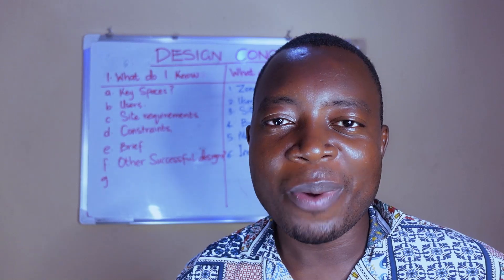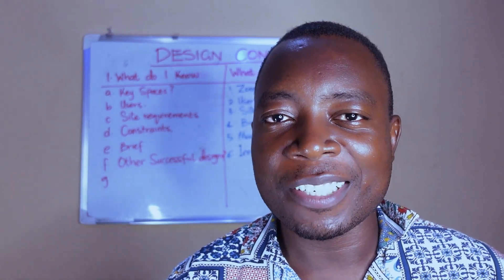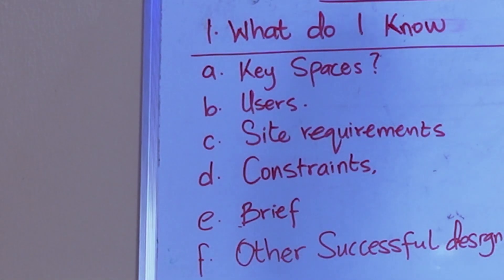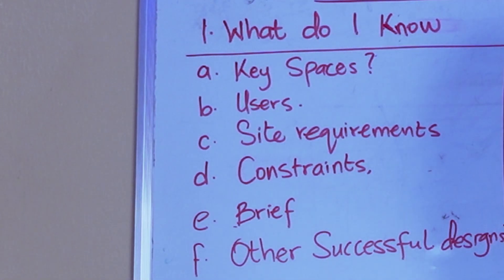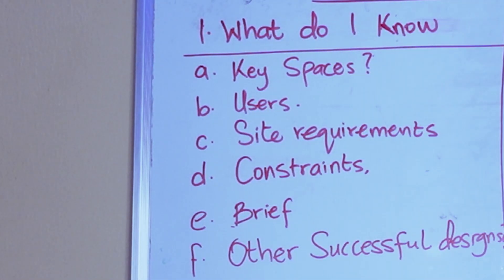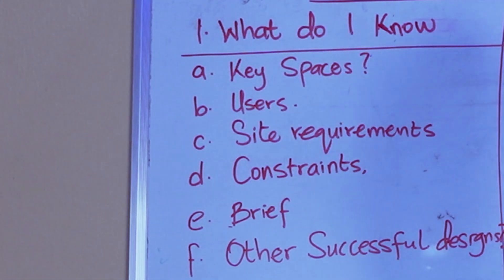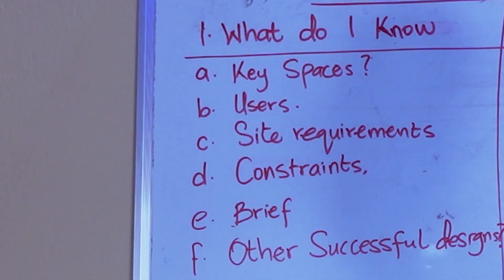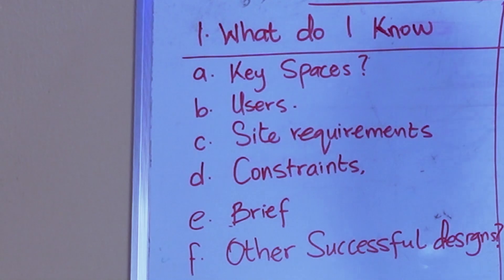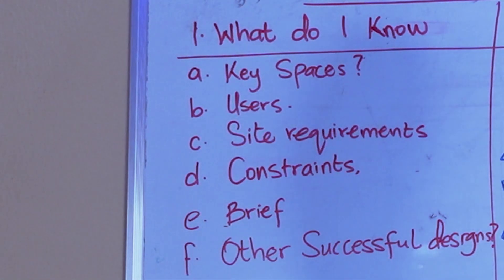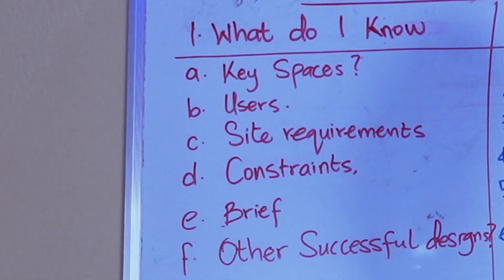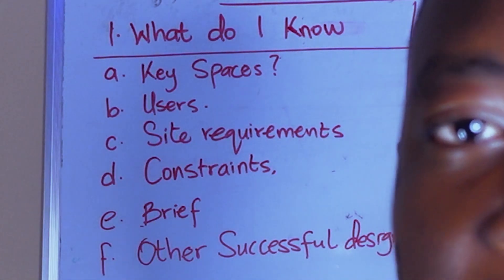The first thing you want to do when you get to the design concept stage is to ask yourself this critical question: what do I know about this project? The first thing is the key spaces. You should ask yourself, what are the key spaces in this project? Let's say we are designing a recreational center — we have indoor games for kids, physical games, digital games, the outdoor sports areas. You need to classify the key spaces.